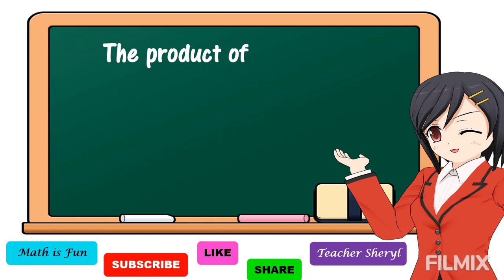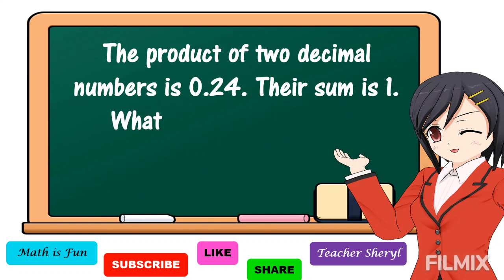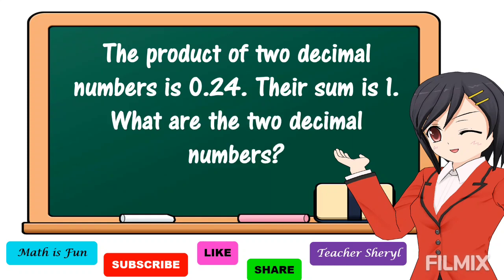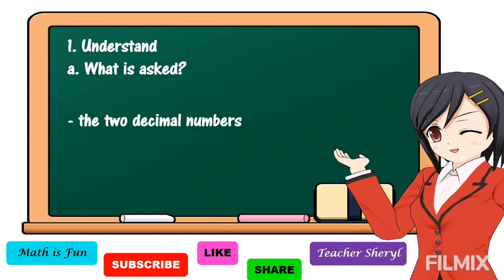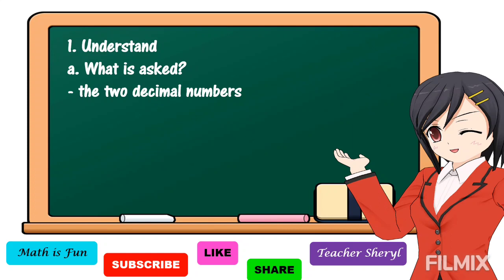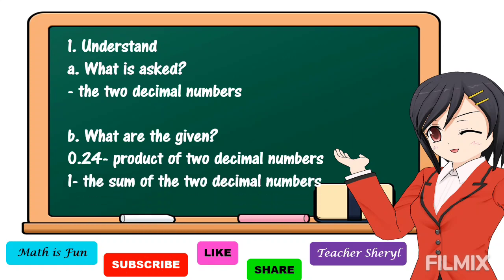Here is our problem: The product of 2 decimal numbers is 24 hundredths. Their sum is 1. What are the 2 decimal numbers? This is an example of a non-routine problem. To answer it, first we understand: what is asked? It is asking for the 2 decimal numbers. The given facts are 24 hundredths as the product of the 2 decimal numbers, and 1 as their sum.